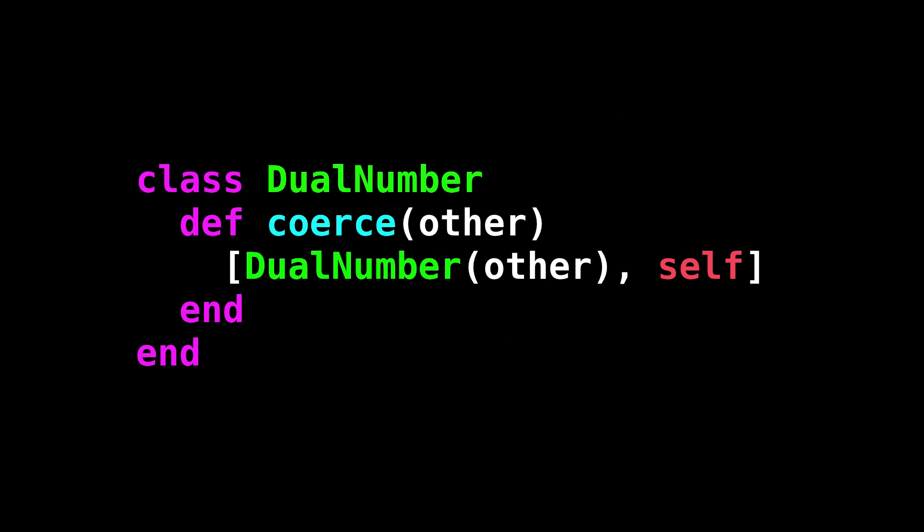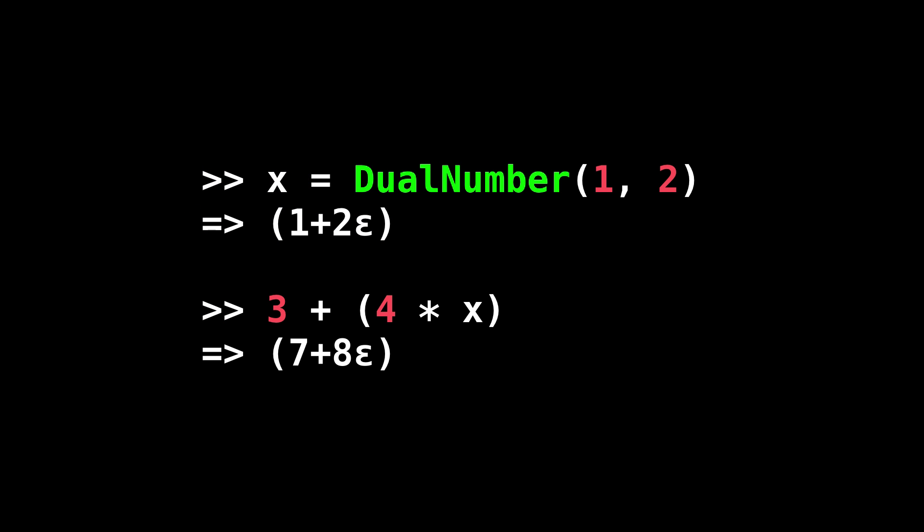This coercion protocol means built-in numbers can interoperate with user-defined ones. So if we implement this coerce method on the DualNumber class, we can make built-in numbers automatically upgrade themselves to a dual number whenever we try to add or multiply by a dual number. And now, addition and multiplication work both ways around.